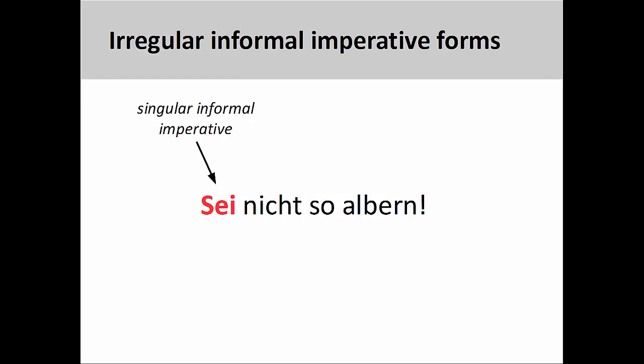Finally, there are some irregular informal imperative forms to be aware of. The most common one you will use is the singular informal imperative of sein, meaning 'to be.' For example: 'sei nicht so albern,' 'don't be so silly.'